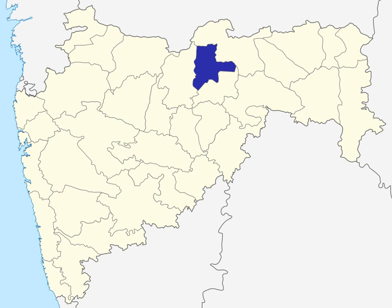Akola district consists of Talukas namely Akot, Telhara, Akola, Balapur, Patur, Barshitakli, and Murtizapur.